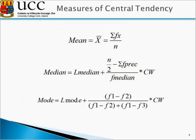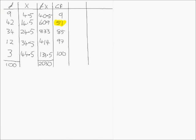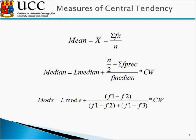The next step is to calculate the mode. We identify the modal category as the one with the highest frequency, which is 42. We apply the formula: lowest value the mode can be, plus (F1 − F2) / (F1 − F2 + F3), multiplied by the class width. Here F1 is the frequency in the modal category, F2 is the frequency preceding it, and F3 is the frequency following it.